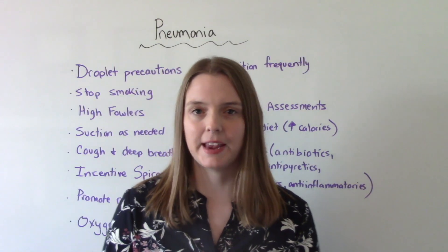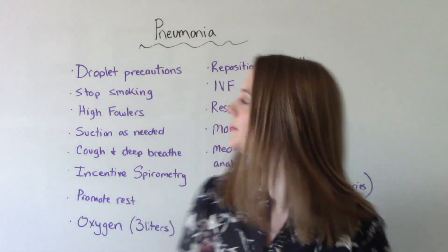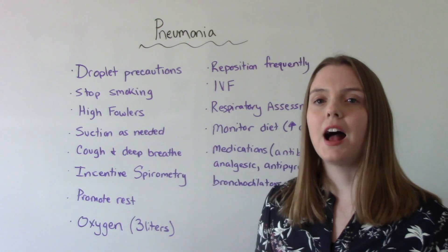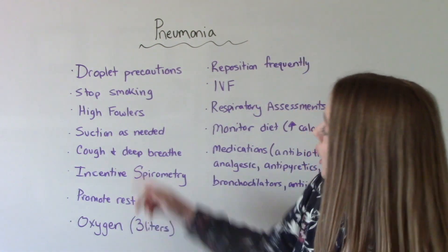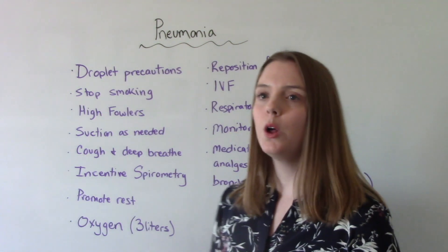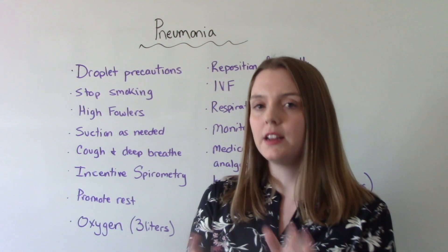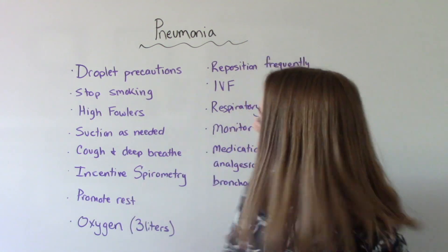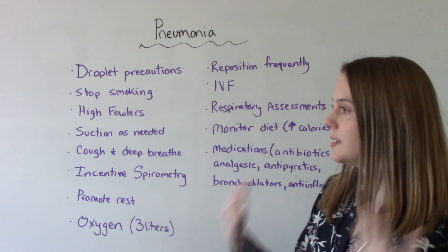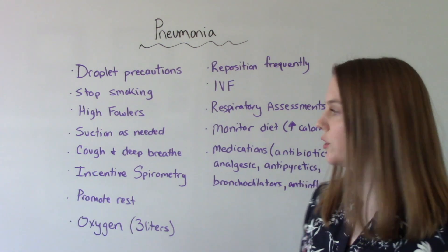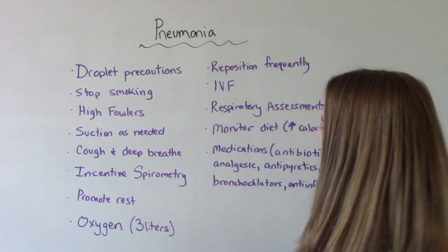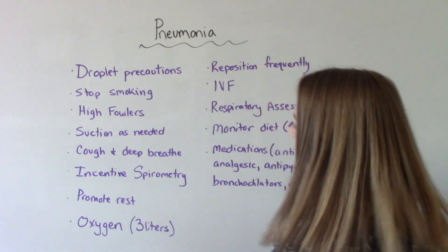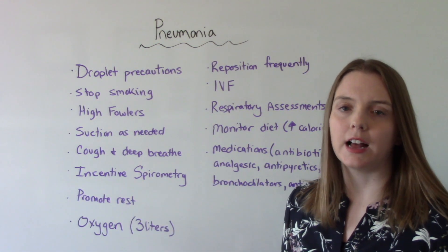When it comes to nursing care, first we're going to put them on droplet precautions. If they are smoking, we want to educate them on smoking cessation and help them to stop. We're going to put them in a high Fowler's position — since one of the symptoms is orthopnea, having them sitting up is going to help facilitate breathing. Suction as needed, because sometimes there's a lot of sputum and some patients don't have a productive cough. Teach the importance of regular coughing and deep breathing to help mobilize secretions, and teach them how to use the incentive spirometer properly to help with lung expansion.